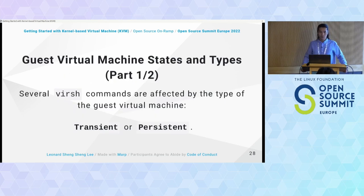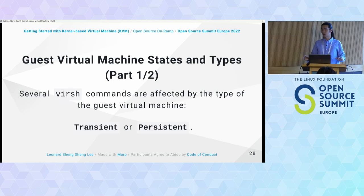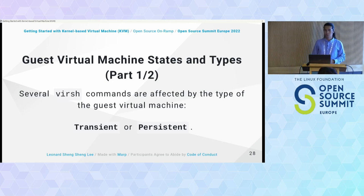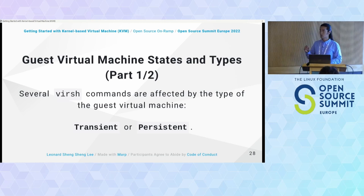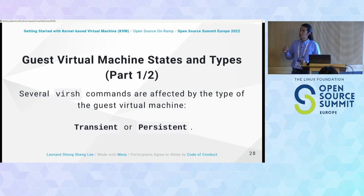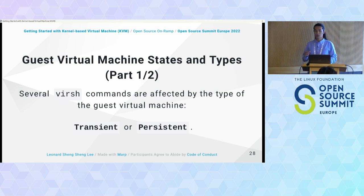Before we use virsh commands to manage KVM, there are a few things to know about guest virtual machine states and types. Several virsh commands are affected by the type of guest virtual machine. Guests usually have two types: transient — meaning the VM won't survive a reboot — and persistent, which survives reboots and exists until you manually delete it.